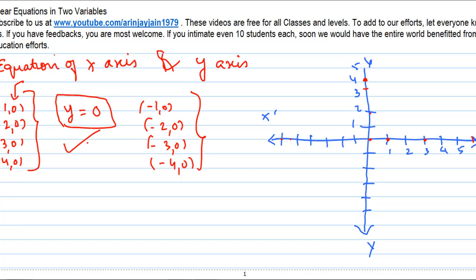And if you were to form it in the form of a linear equation, you know that a linear equation in two variables is ax + by + c = 0. Now we have y = 0, so 0x + 1y + 0 = 0.